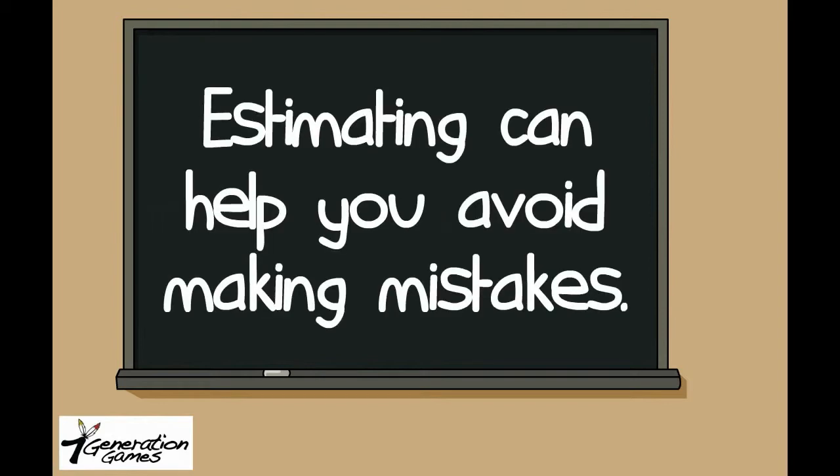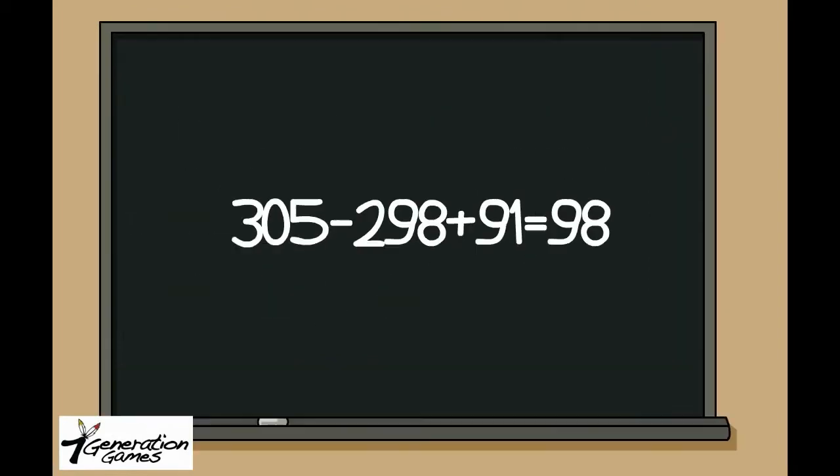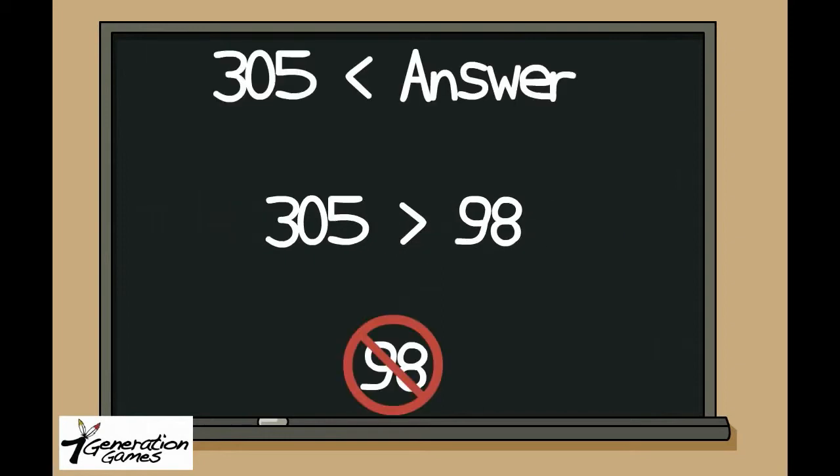Estimating helps you avoid making silly mistakes. If you unintentionally start by subtracting 298 from 305 and then adding 91, you'll get an answer of 98. Remembering that you estimated your answer would be more than 305, you'll know right away you made a mistake.